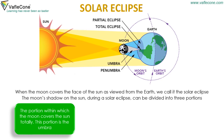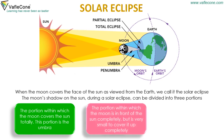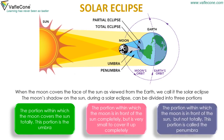The portion within which the moon is in front of the sun completely but is too small to cover it up completely, and the portion within which the moon is in front of the sun but not totally — this portion is called the penumbra.